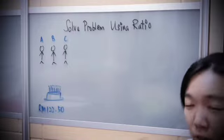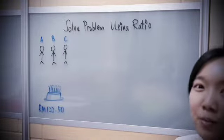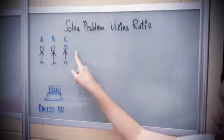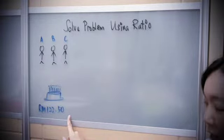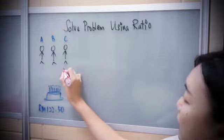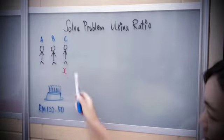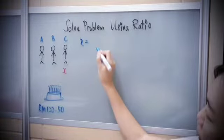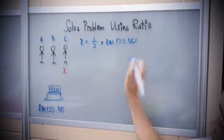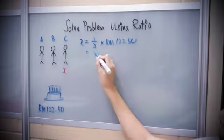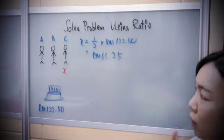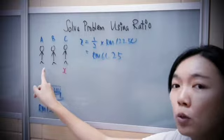How am I supposed to find A, B, C? It sounds complicated — but calm down, understand the story step by step. First, it says C shares half of the price of the cake. I don't know how much C pays, so I put it as X. X equals half of the price of the cake. This is quite straightforward — put it in the calculator to get RM61.25.